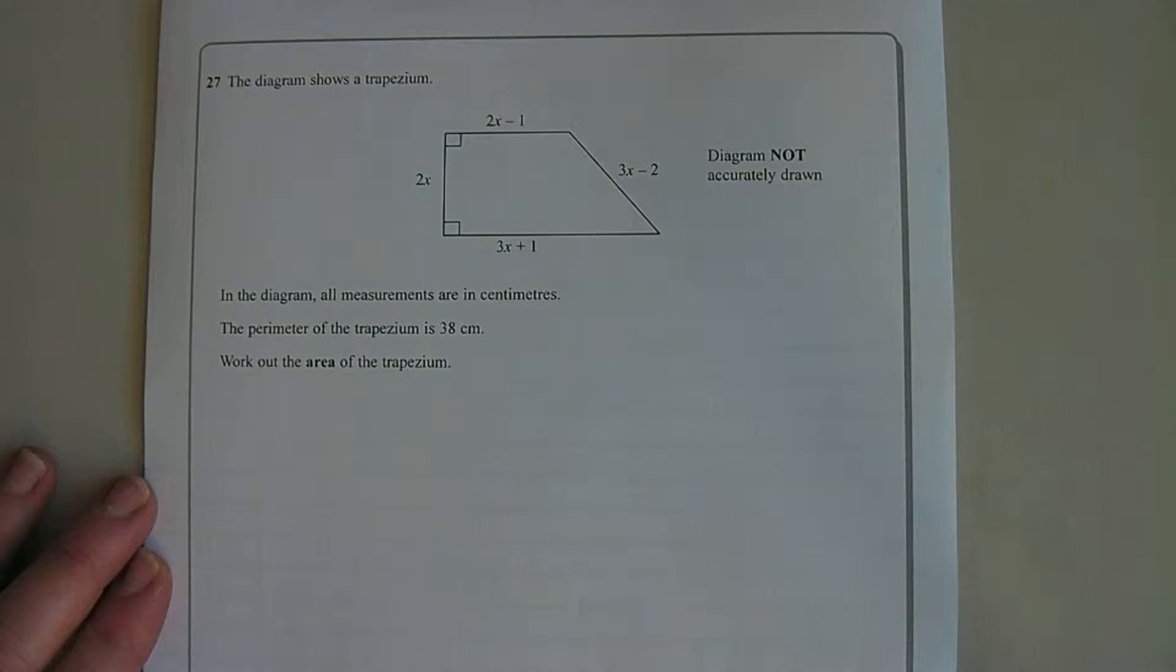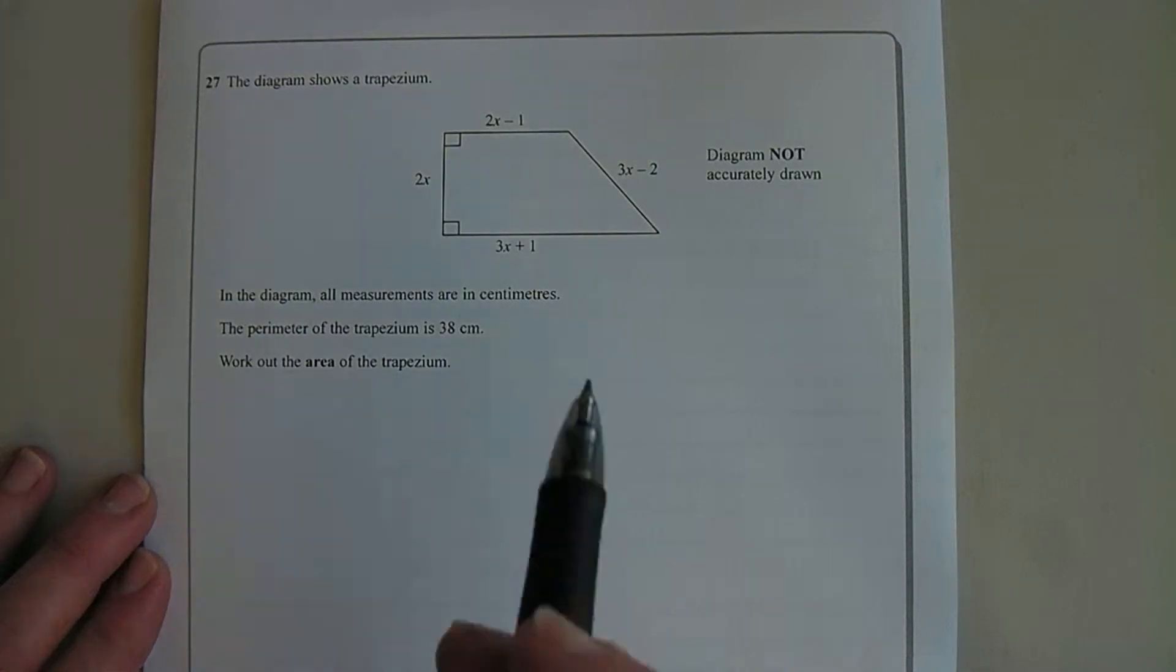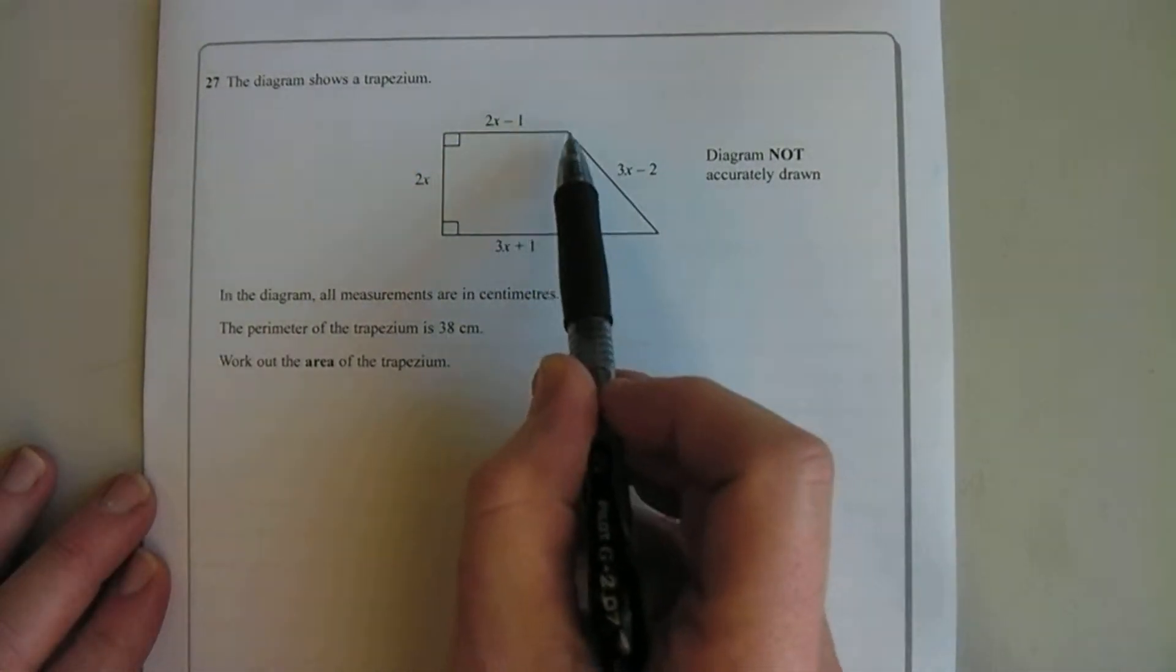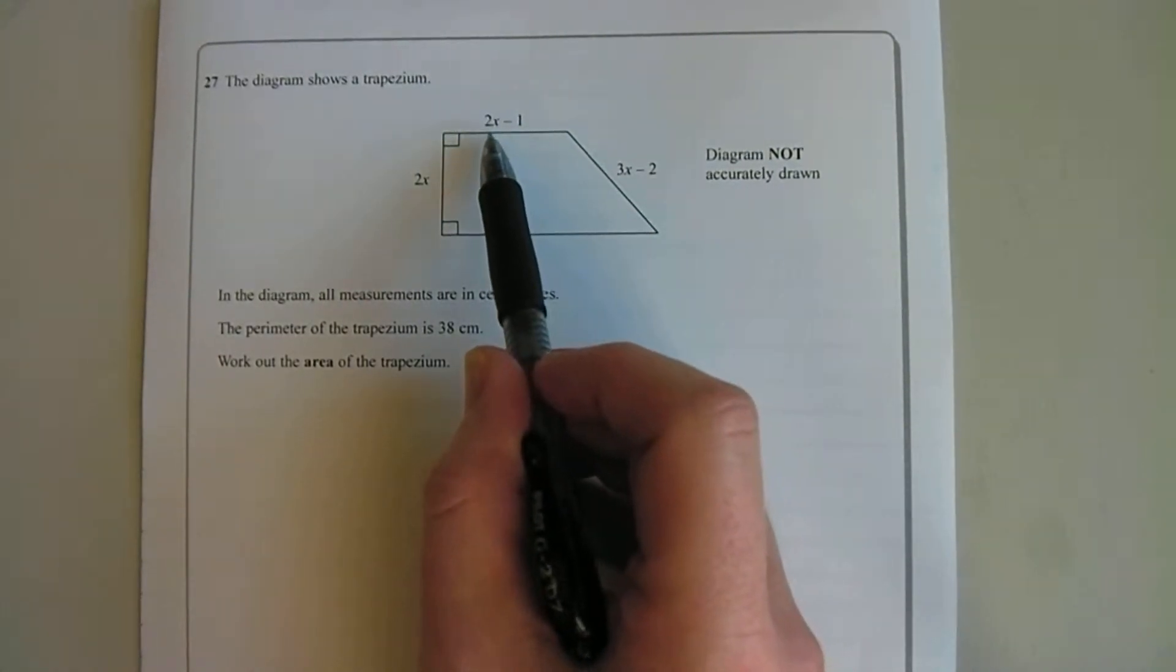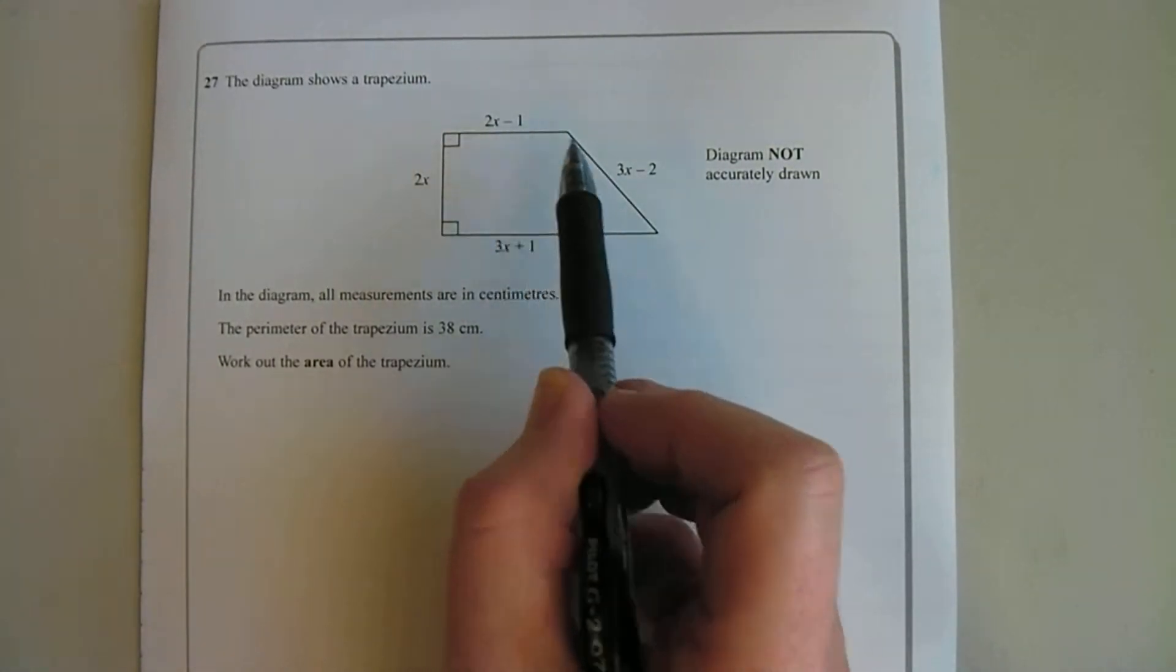Primarily this question is about the use of algebra in a multi-step question. We've got a diagram of a trapezium and each of the lengths of the sides is given by an algebraic equation. So the top one is 2x-1, the side is 3x-2, the base is 3x+1, and the other side is 2x.